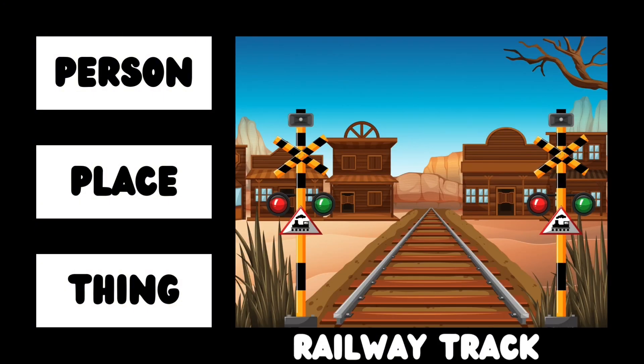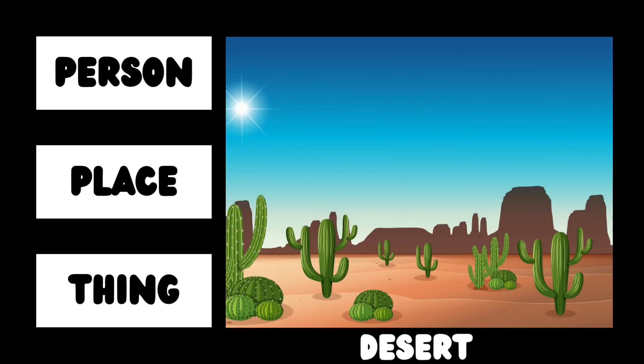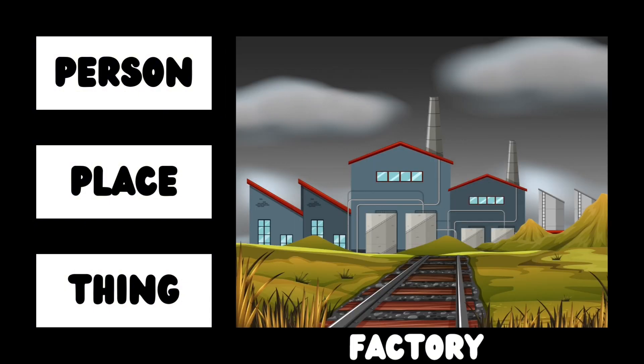A railway track is a track for a train. A barn is a building on a farm where animals are kept. A desert is a very hot and very dry place. A factory is a place where people and machines work and make stuff we use, like clothes and toys.